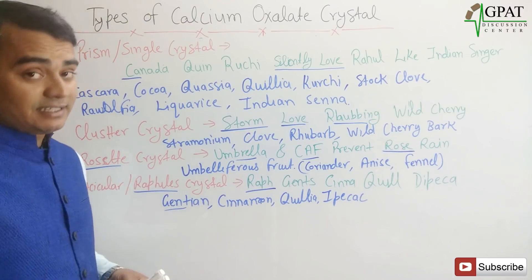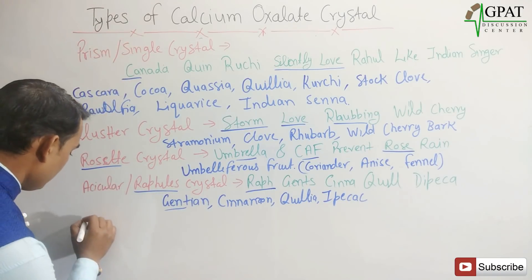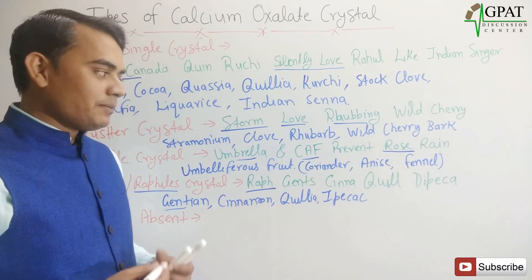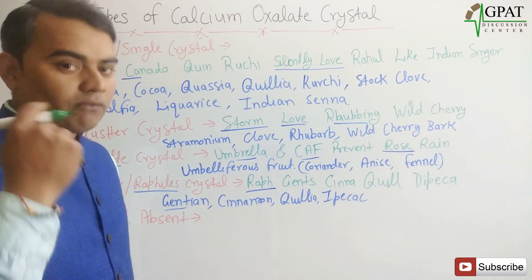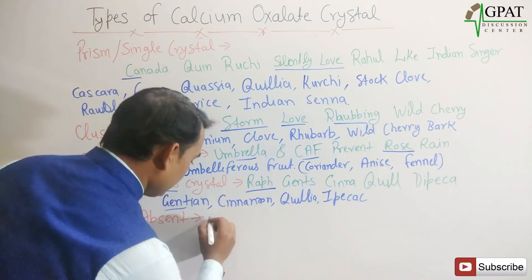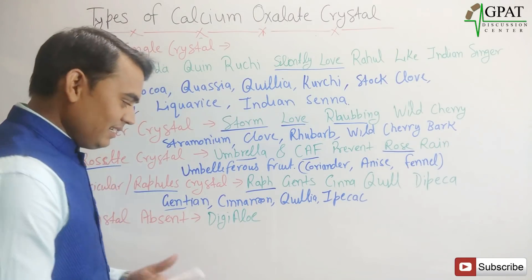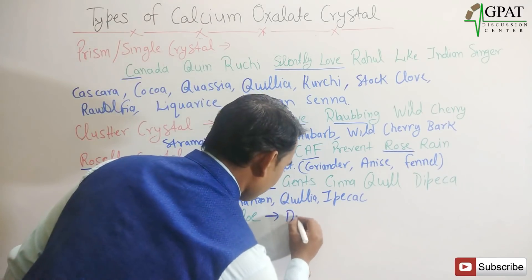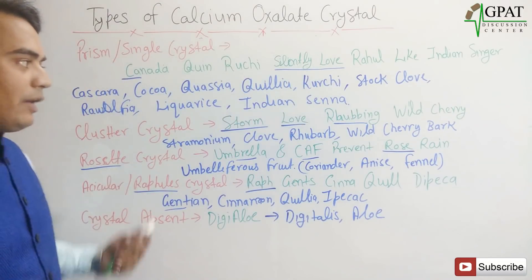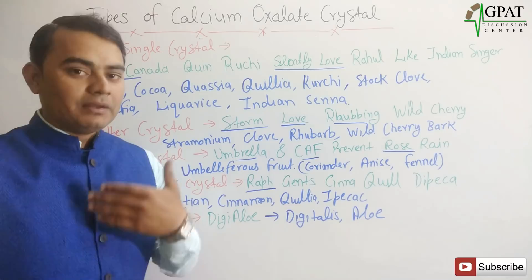Now, in which medicinal plants is the calcium oxalate crystal absent? For crystal absent, remember just one phrase: 'dizzy alloy.' Here only two drugs — Dizzy means Digitalis and Alloy means Aloe. I hope these tricks are helpful for you. If you like this video, please like, comment, and subscribe to our channel. Thank you.